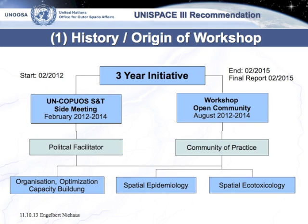The Action Team 6 follow-up initiative is a three-year initiative which has two main pillars. One pillar is the UN COPUOS scientific and technical subcommittee side meeting every February in Vienna, which facilitates political support for public health risk mitigation. The second pillar consists of yearly workshops — international expert meetings — as a community of practice for public health risk mitigation.